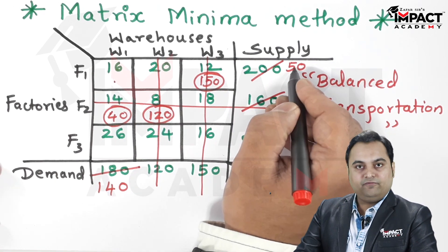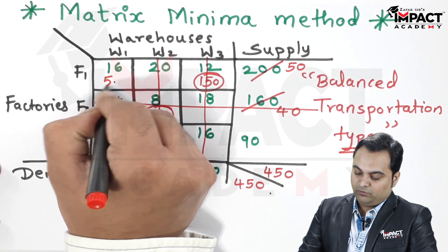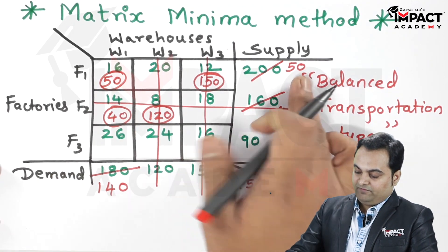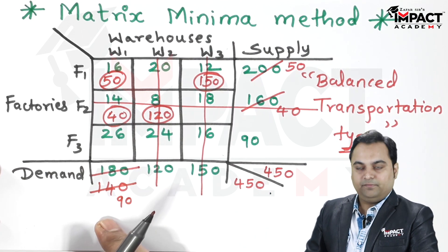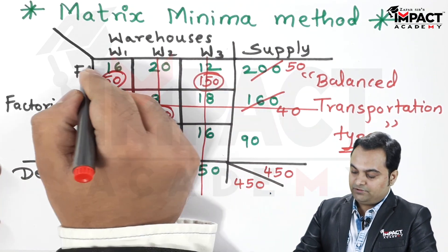Here we have 16. Demand is 140 but supply is only 50, so 50 would be supplied here. From 140, 50 would be subtracted, so we have 90 here. Now the demand is not completely met but the supply is completed, so I can cancel this entire row.